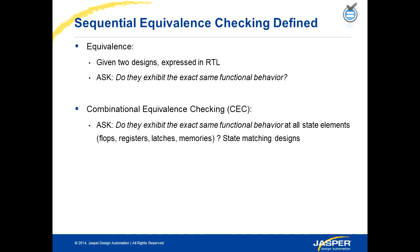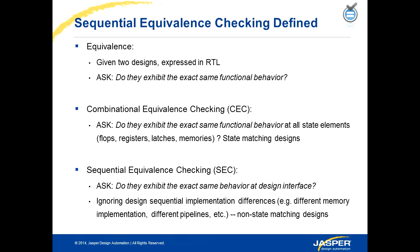Combinational equivalence checking is applicable when you have two designs where you expect every state element in the two designs to be equal — this is more applicable when there is state matching. You use sequential equivalence checking when not every state element is equal in the two designs, but eventually you expect all the signals at the interface to be equivalent. The sequential equivalence checking problem is more complex compared to combinational equivalence checking.